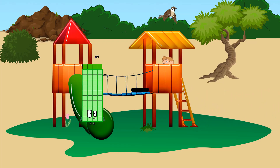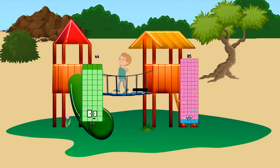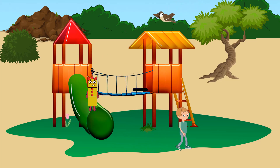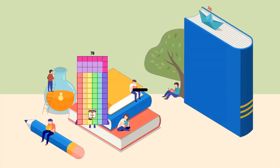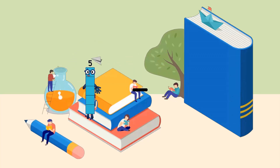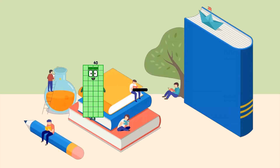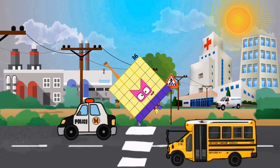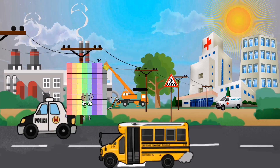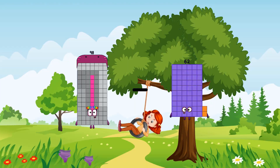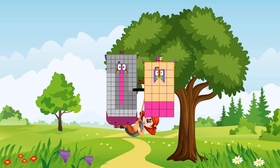78 minus 28 equals 51. 40 minus 4 equals 36. 98 minus 28 equals 70. 82 minus 70 equals 12.